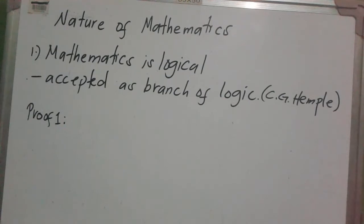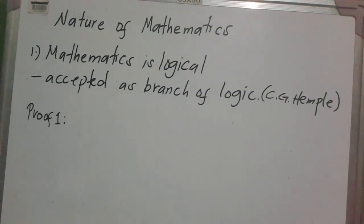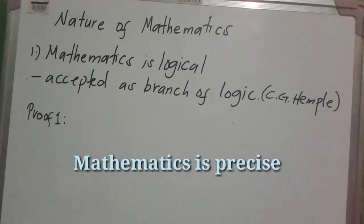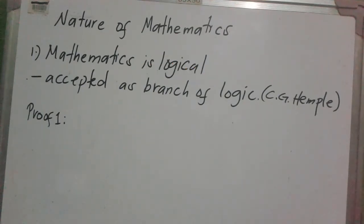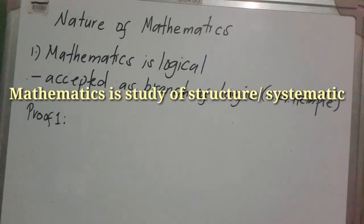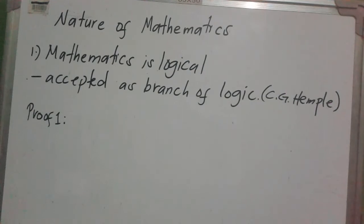What's up guys. For today's video we're going to have the nature of mathematics. There are five natures of mathematics: mathematics is logical, mathematics is precise, mathematics is symbolic, mathematics is a study of structure or systematic, and mathematics aims at abstraction.